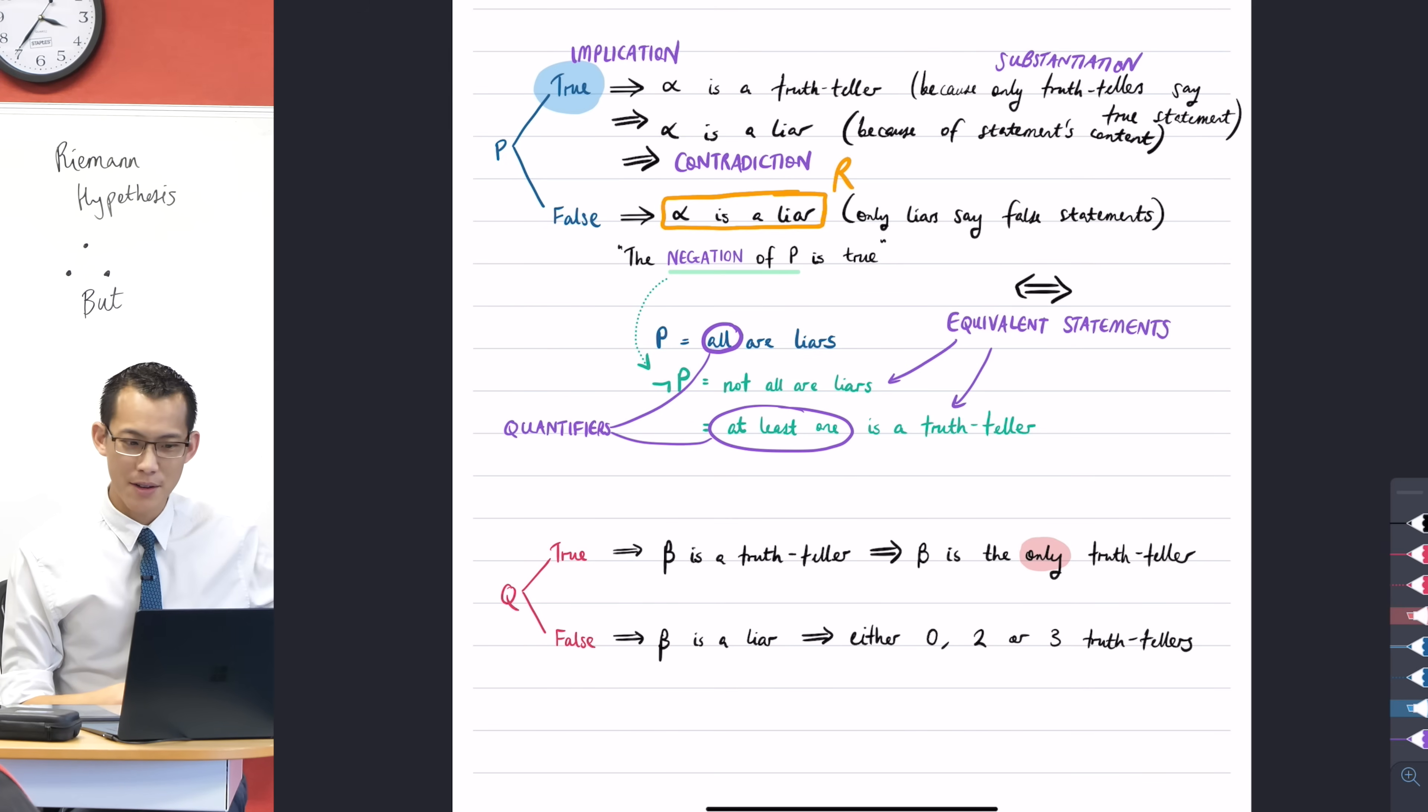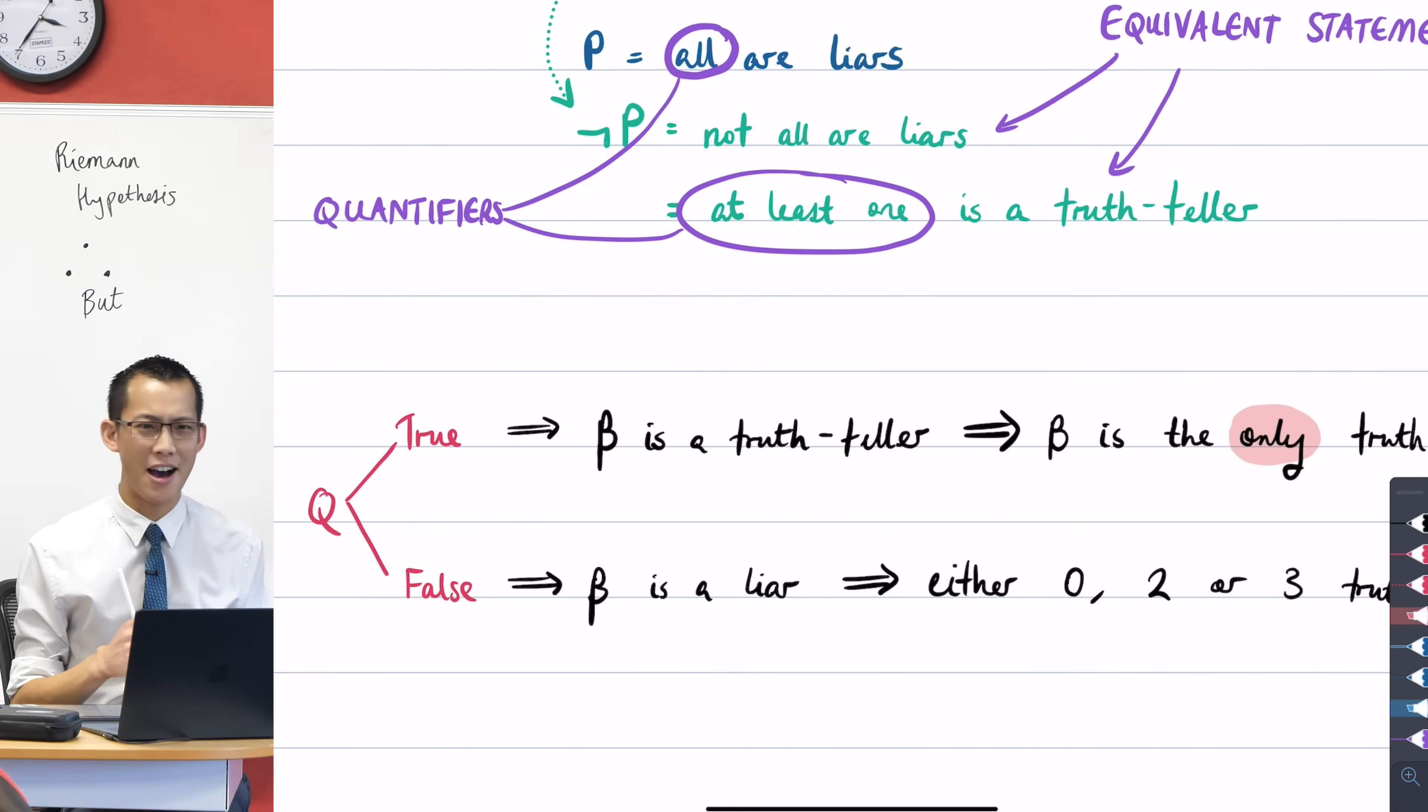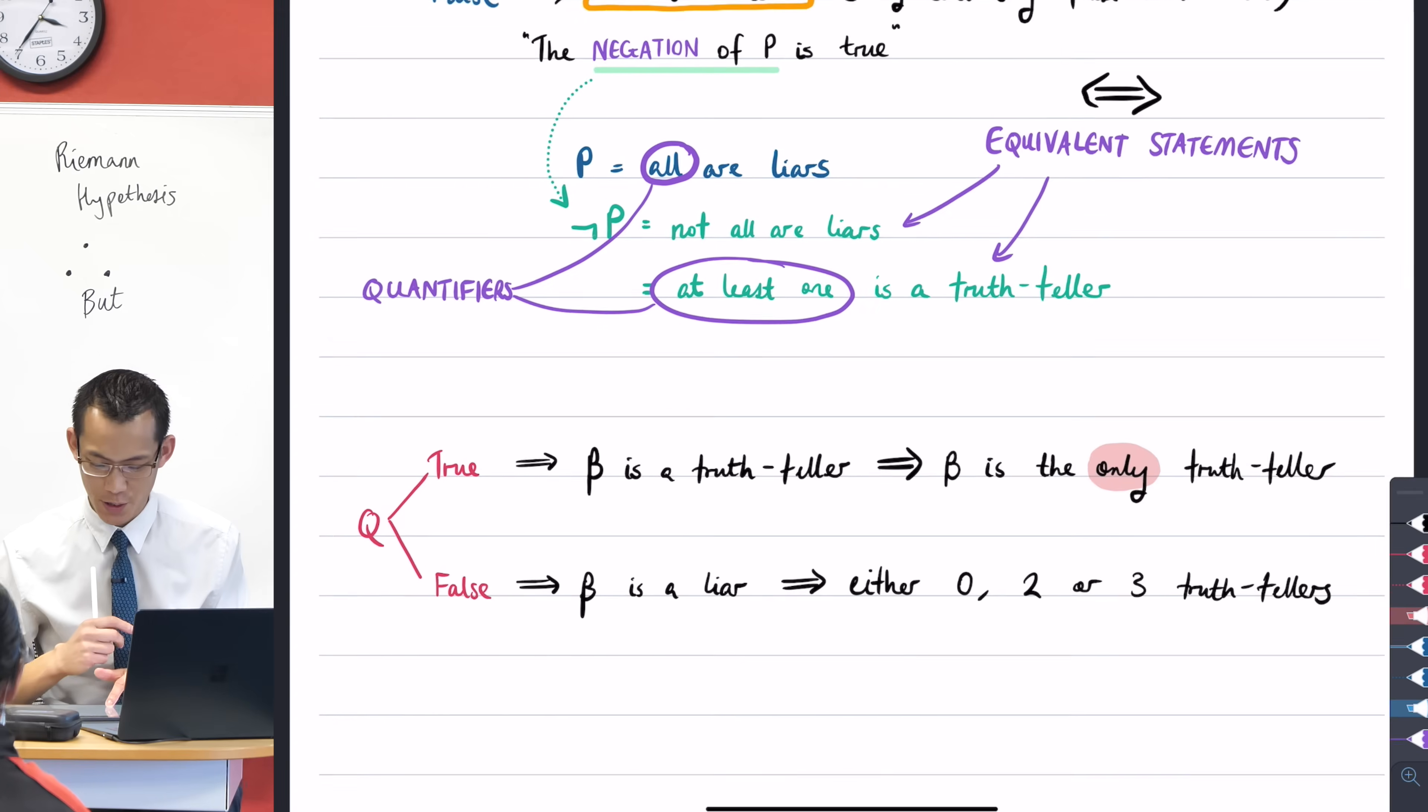Now, why is statement R relevant? If alpha is a liar, and beta is also a liar, how many liars are there? There are two. So I can say, wait a second, there's a contradiction here, because I can say off of this statement here.